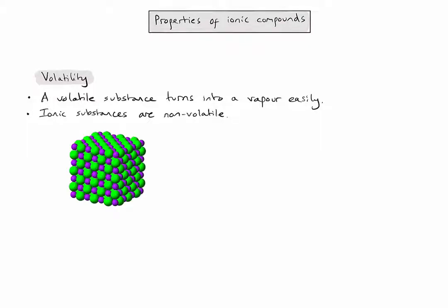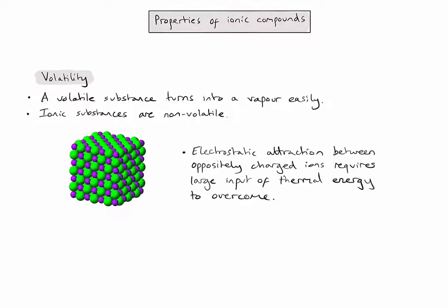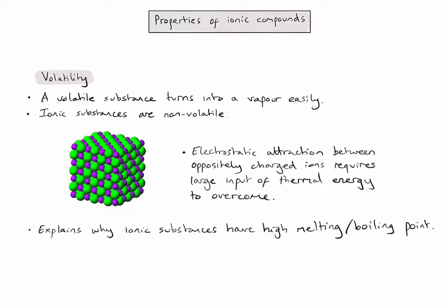In an ionic lattice, as shown in the diagram, we have lots of oppositely charged ions being attracted to each other. It requires a large input of thermal energy in order to overcome those attractions and separate the ions. This means it's difficult to turn a solid ionic substance into a vapor, which is why we find ionic substances with high melting and boiling points — because there are lots of electrostatic forces of attraction that we need to overcome.